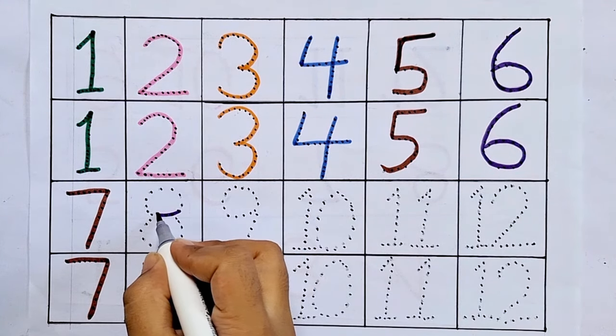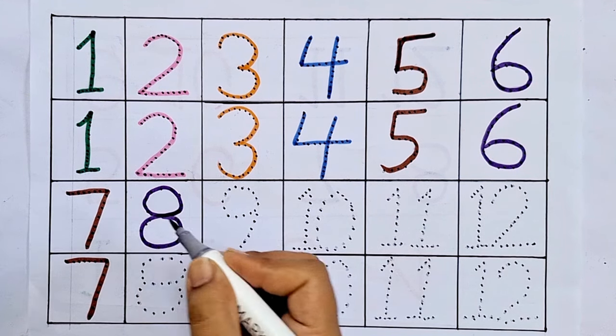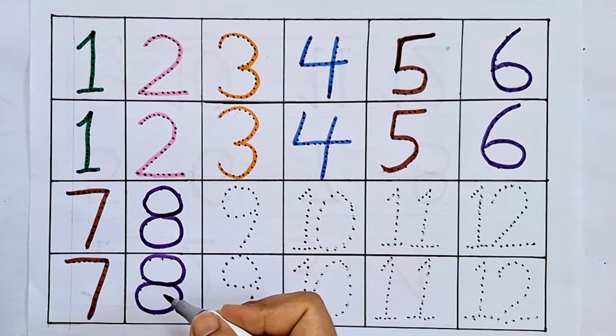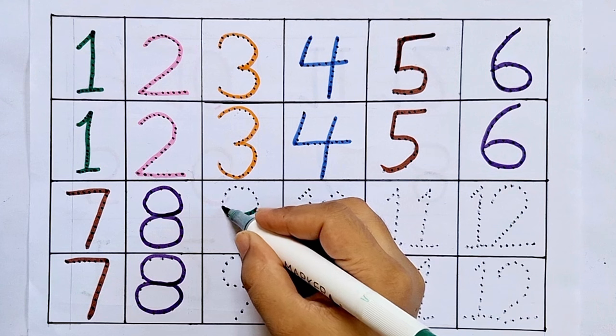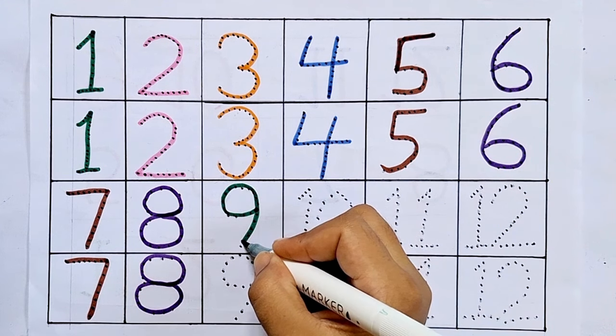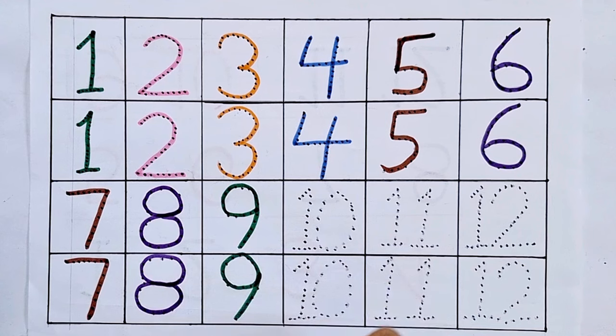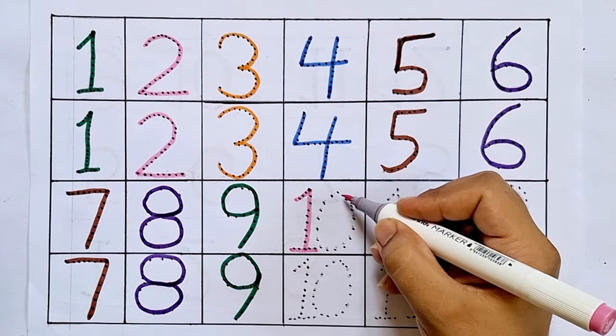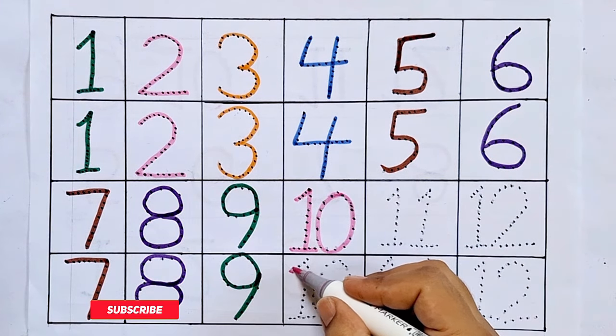Eight. This is eight. After seven comes eight. Nine. This is nine. After eight comes nine. Ten. This is ten, one zero. After nine comes ten.